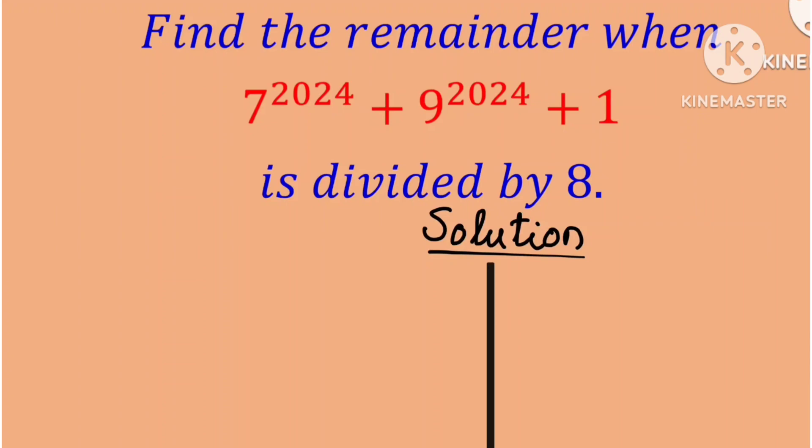Find the remainder when 7 raised to the power 2024 plus 9 raised to the power 2024 plus 1 is divided by 8. This is another interesting question in number theory, and we are going to answer this question by using a very simple technique.